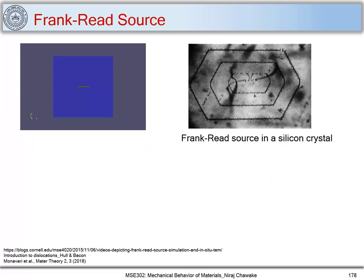Now let's look at the simulation: you can see dislocation loops forming and the source trying to form another loop in the material. This is how loops form from a Frank-Reed source. There is also a TEM image showing a Frank-Reed source operating in a silicon crystal, demonstrating this mechanism experimentally.